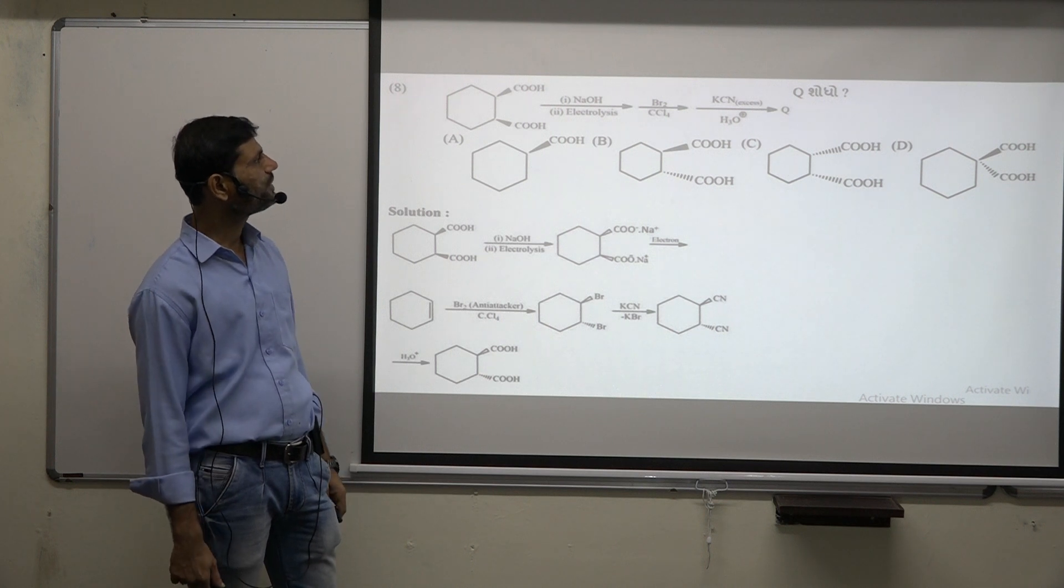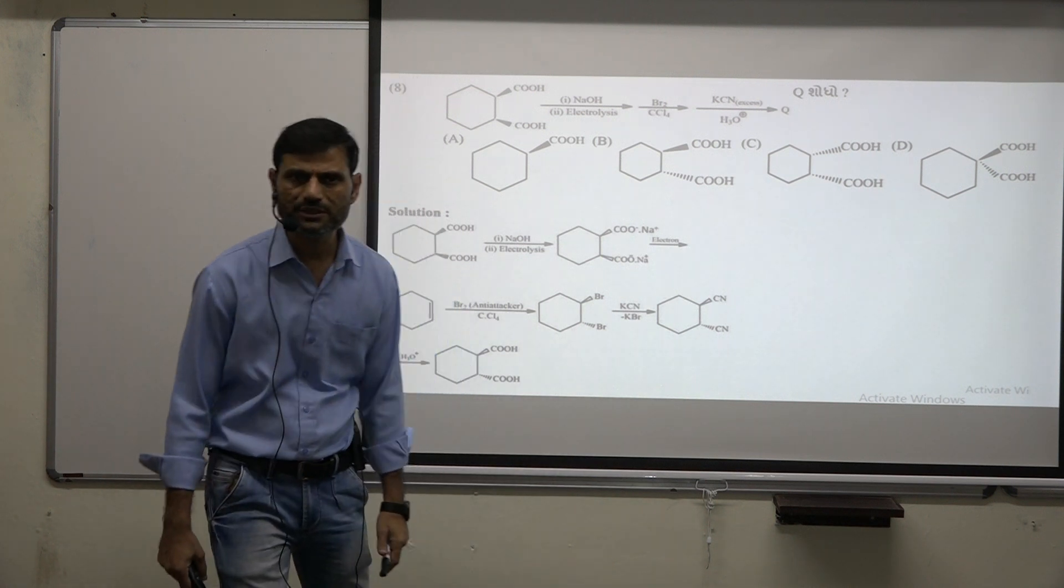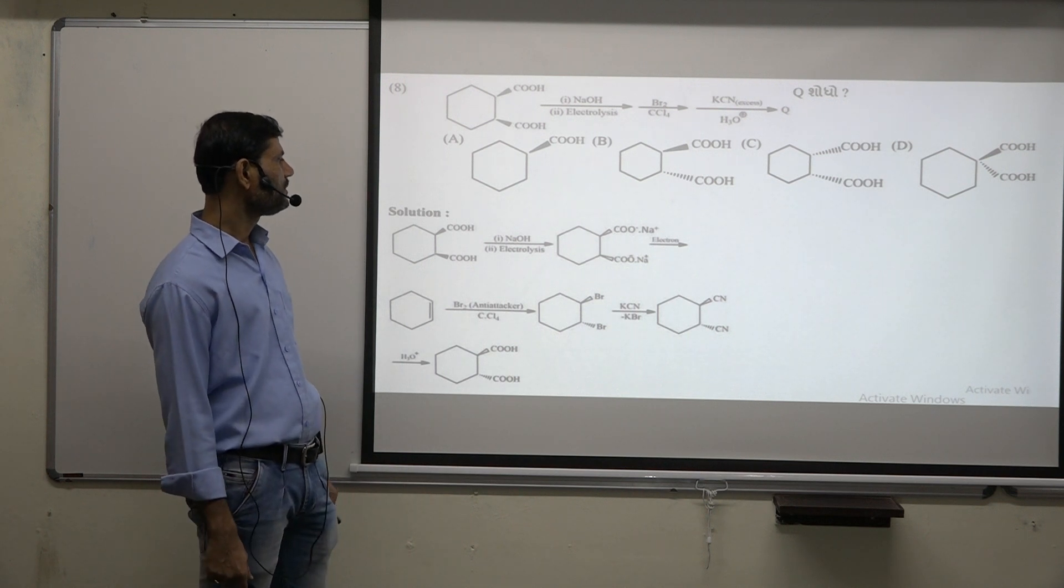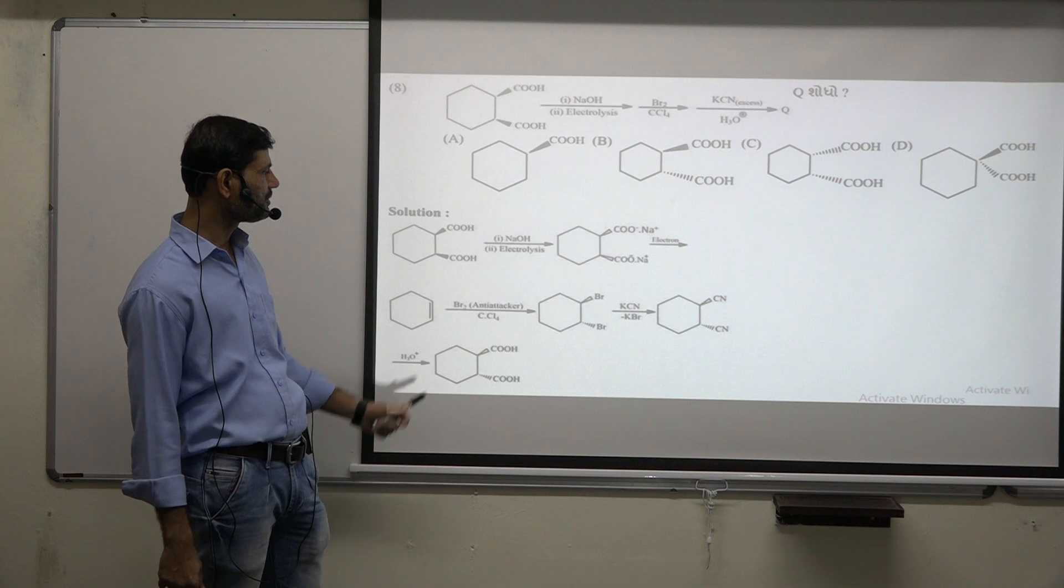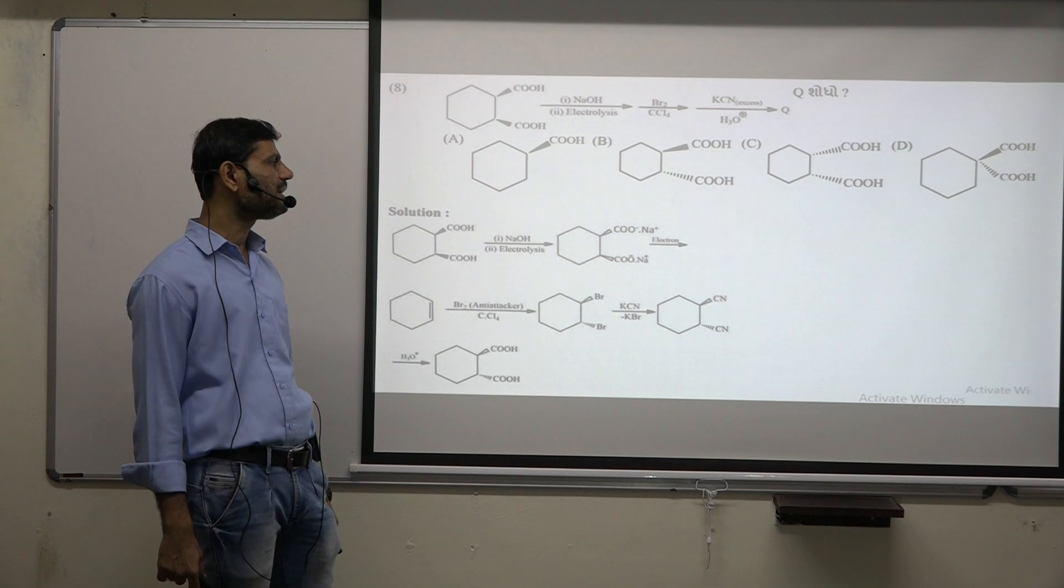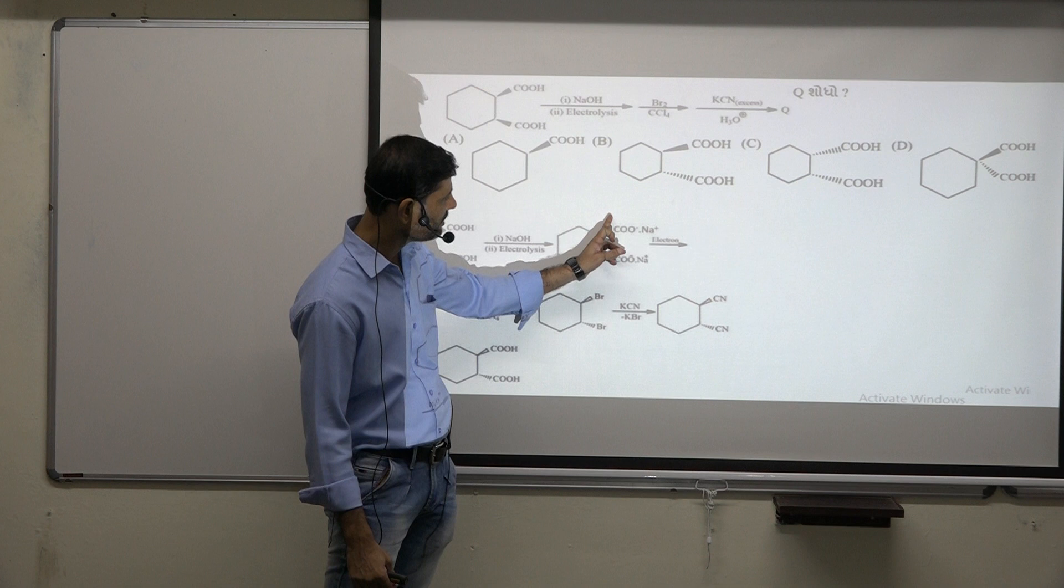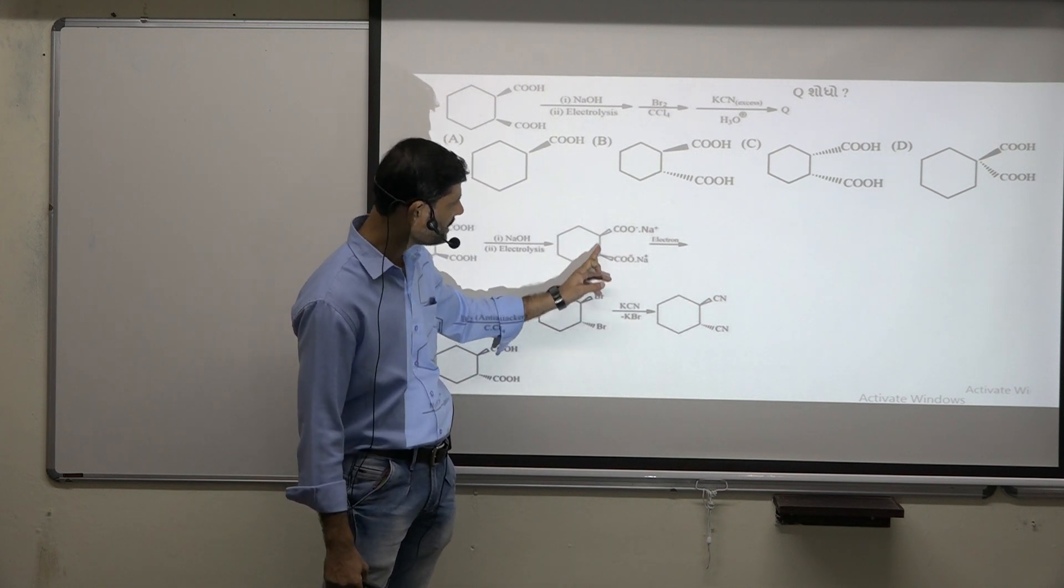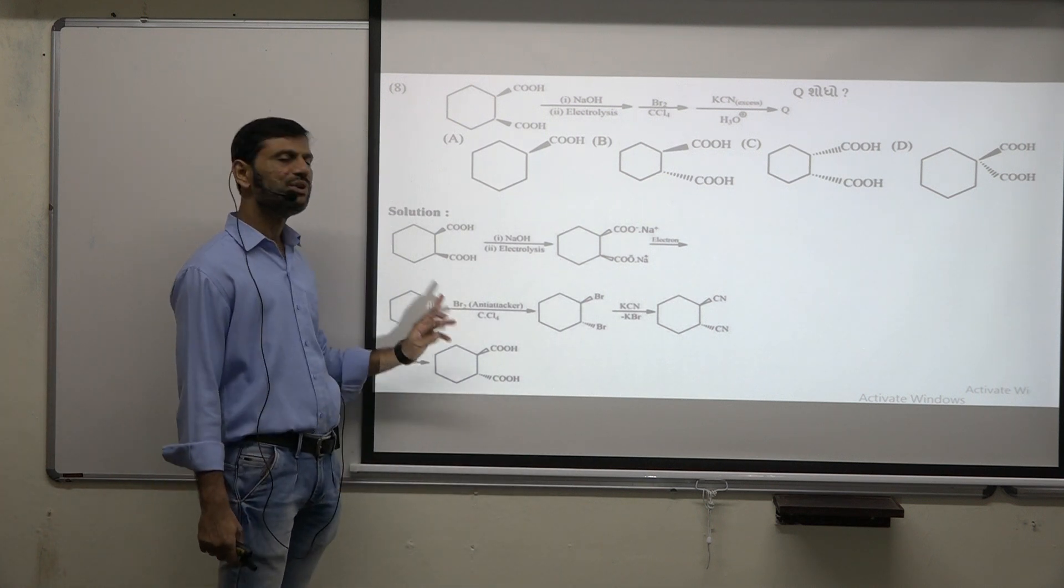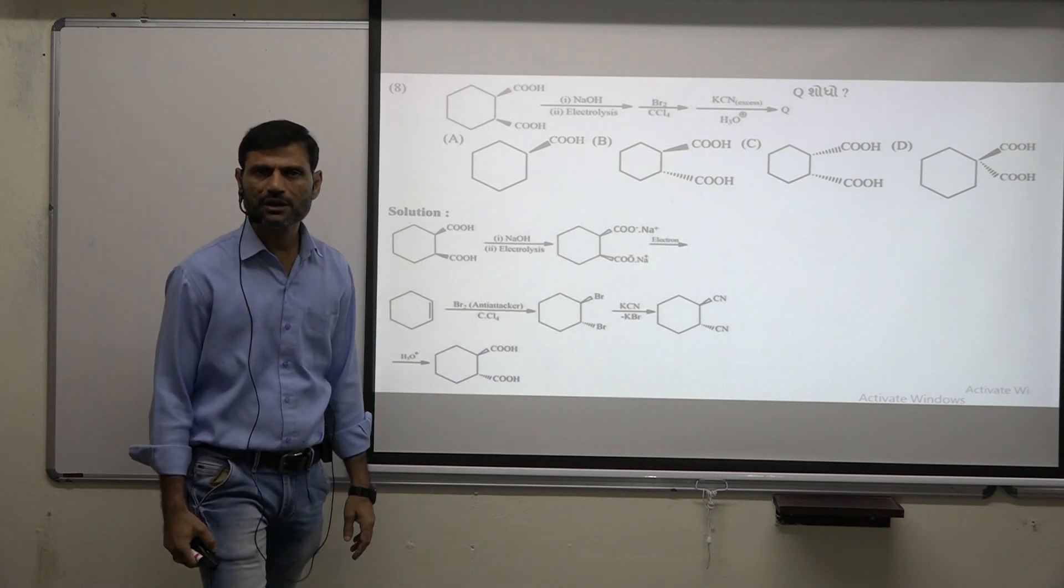Next question: COOH COOH with NaOH electrolysis. In presence of NaOH, electrolysis is done. From electrolysis, the product formed: first with sodium hydroxide reaction, COO minus Na plus COO minus Na plus forms. Now you do electrolysis. Electrolysis as we learned, this bond breaks. When bond breaks, what happens? Double bond forms.